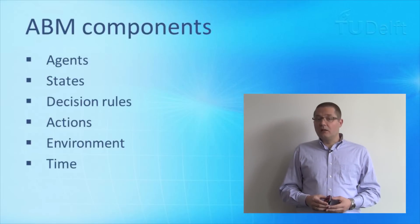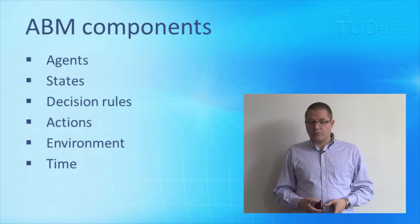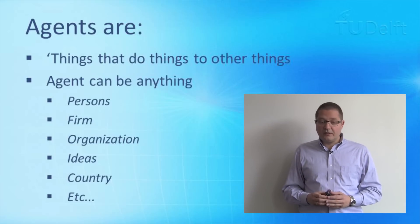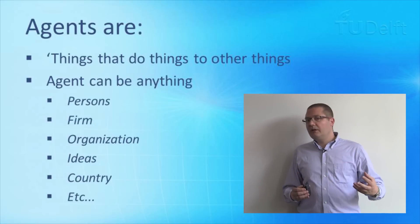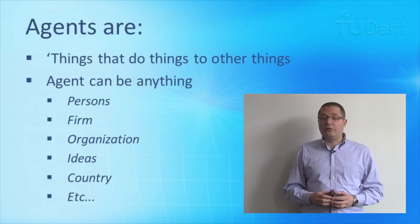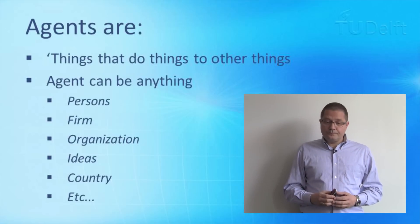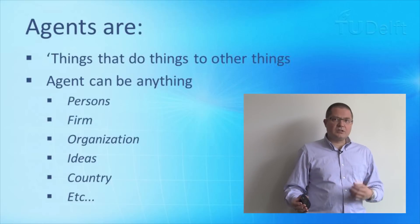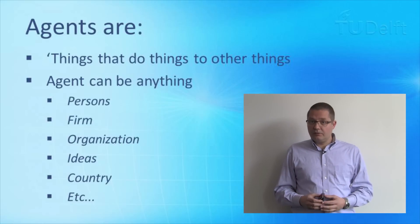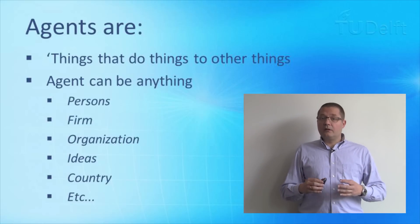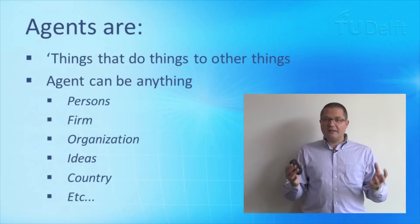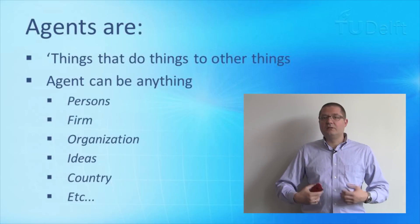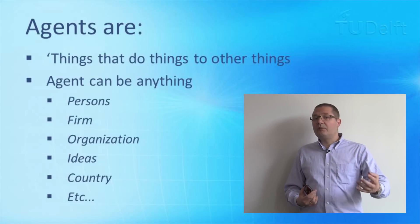The agents themselves are things that do things to other things. An agent can be anything you care about and think is worth exploring — for example, individual people, firms, organizations, ideas, countries, technologies, bacteria, whatever you really care about. The key is to identify a relevant entity that has a boundary, a clear inside and outside, an internal state, decision-making processes, and is capable of actions.